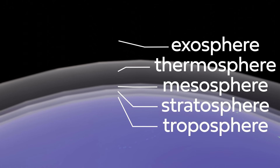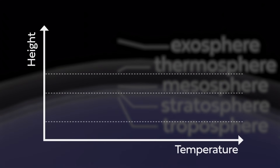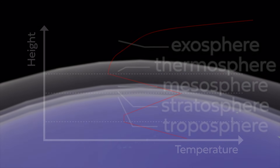These layers are defined by how temperature changes with altitude. In the troposphere, the air temperature decreases as you get higher. Then when you reach the stratosphere, the temperature stays the same and in fact increases with altitude. In the mesosphere, we're back to air temperature decreasing with altitude again, and then, thanks to ionizing radiation from the sun, temperatures increase with altitude again in the thermosphere.